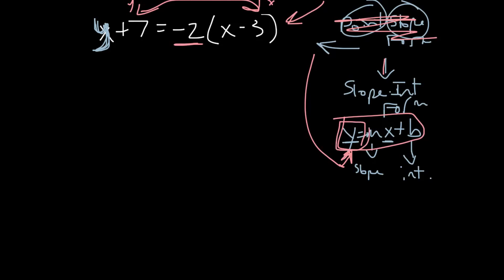So our ultimate goal right now is to get y by itself and there's no parentheses. So first thing I'm going to do is get rid of the parentheses, so I just distribute the negative two in there. So y plus seven equals negative two times x is negative 2x, and then negative two times negative three is positive six. Remember because a negative times a negative equals a positive.